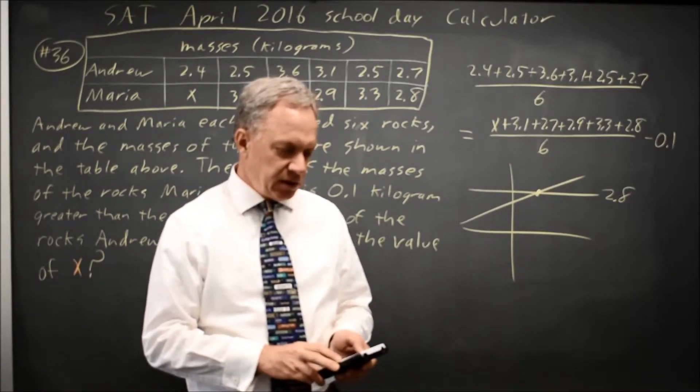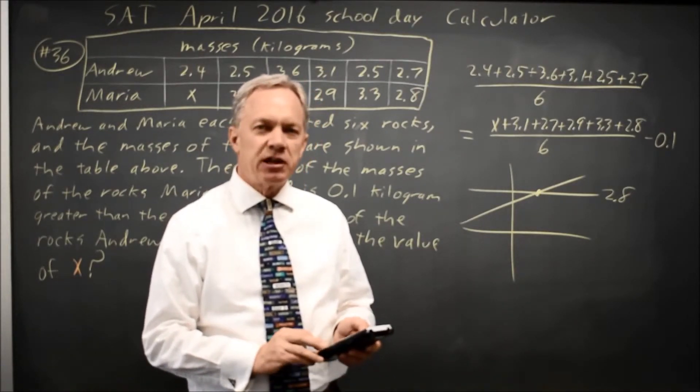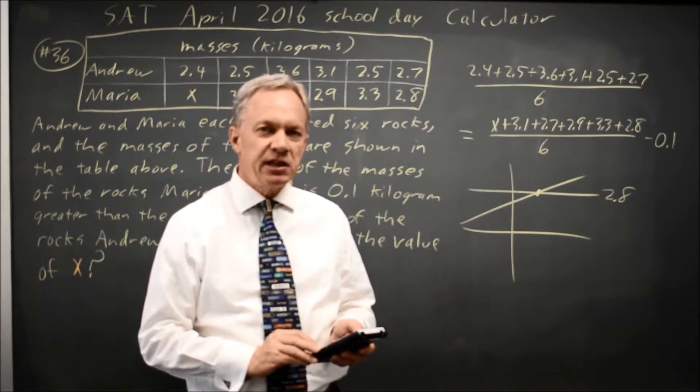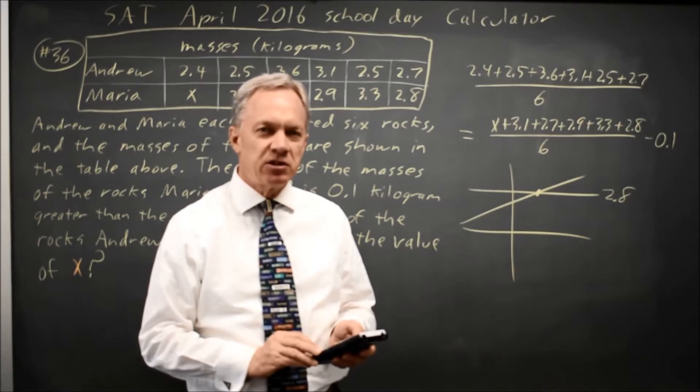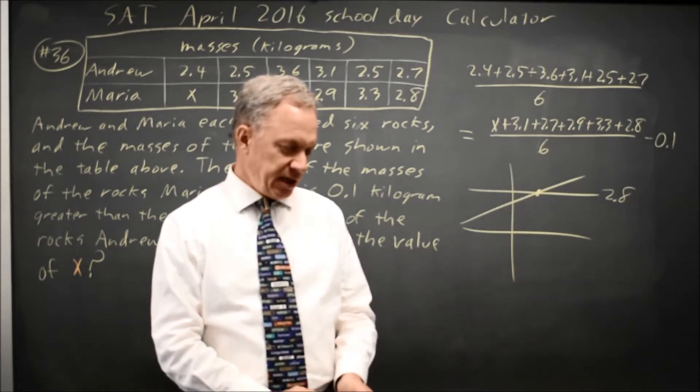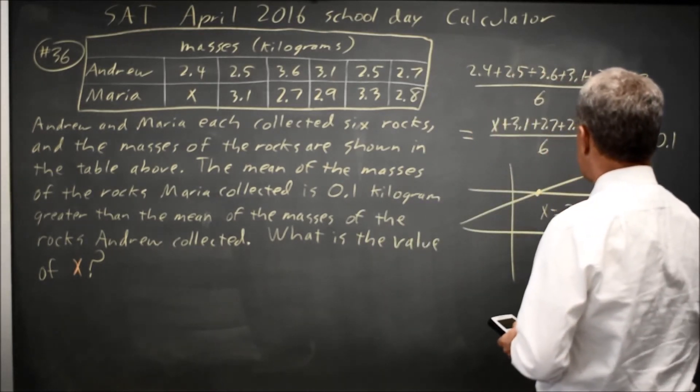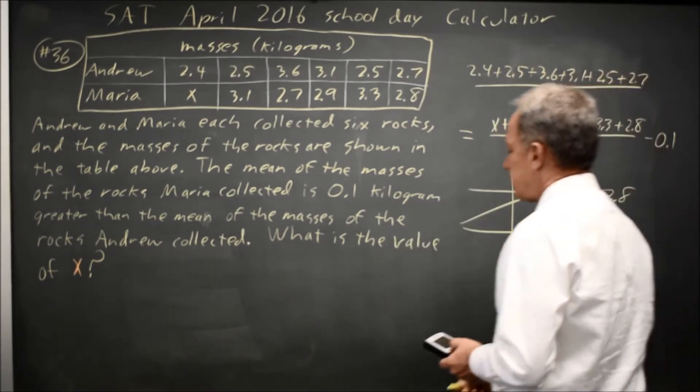So calculate second trace on my TI-83 or 84, scroll down to intersect, which is choice 5, hit enter, and then just hit enter three times. There's no need to use your cursor to move closer, and I get x equals 2.6, and that would be my answer.